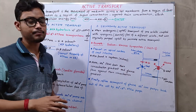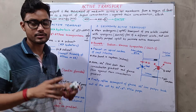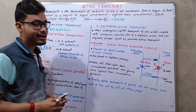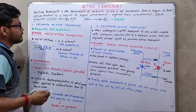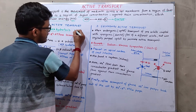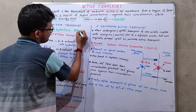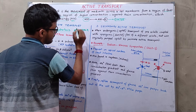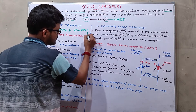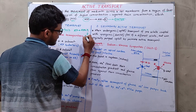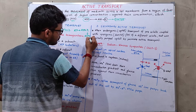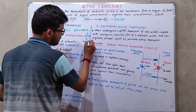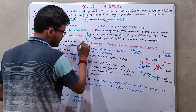Active transport is subdivided into two major categories: primary active transport and secondary active transport. In primary active transport, ATP hydrolysis is required — ATP is broken down to ADP (adenosine diphosphate) and Pi (inorganic phosphate) — and the energy released is responsible for moving molecules against their concentration gradient.